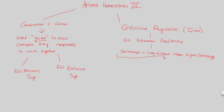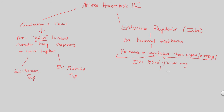The best way to understand this is to put it in the context of a hormonal example. Think of blood glucose regulation — this is something that is constantly occurring within us. Blood glucose is really critical in maintaining homeostasis, and in order to maintain homeostasis, you need to maintain a certain set point, a certain blood glucose level.